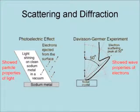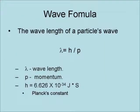As you can see, the resulting scattering has peaks and valleys due to diffraction. The formula for the wavelength of a particle's wave is lambda equals h over p,